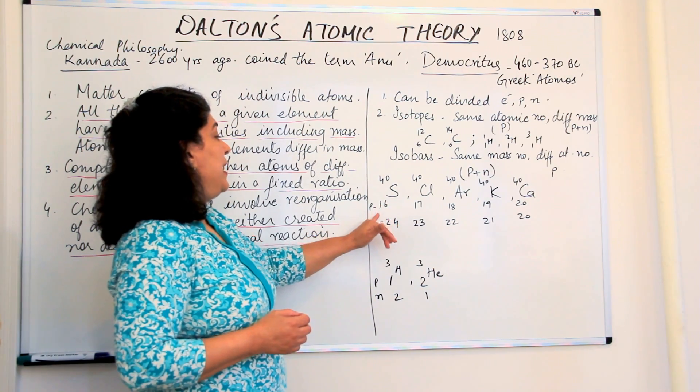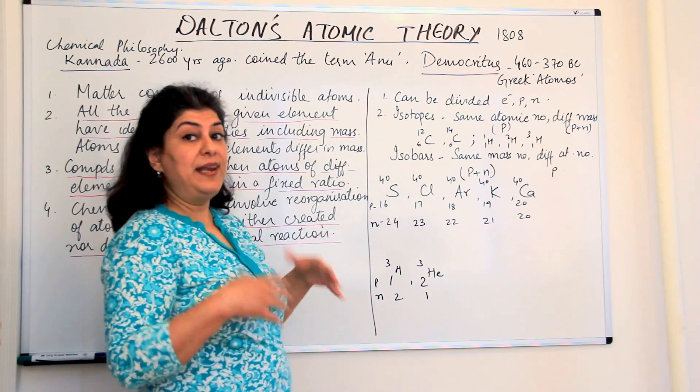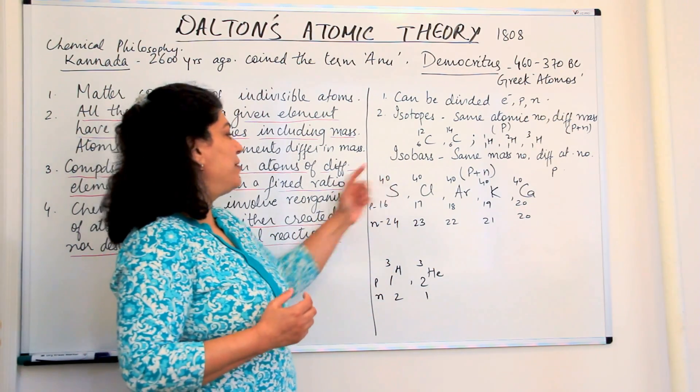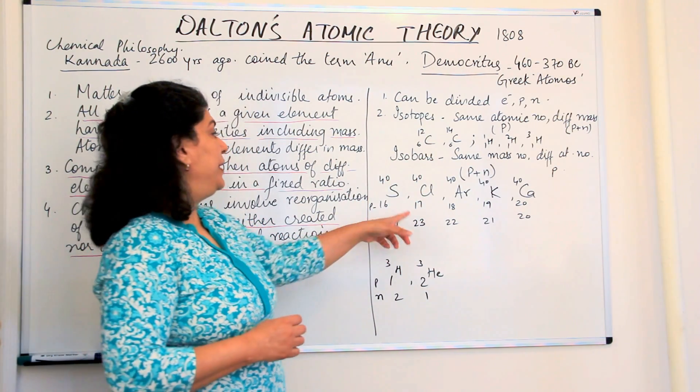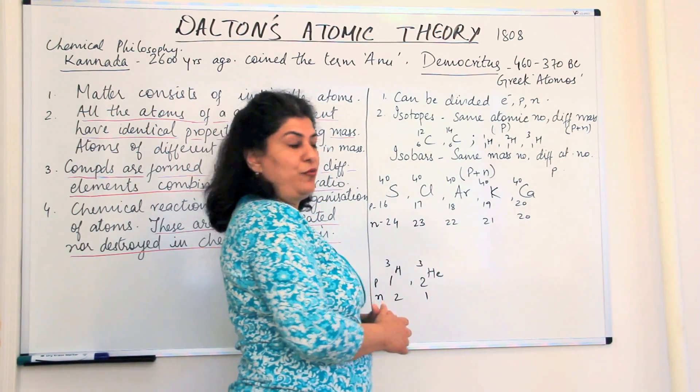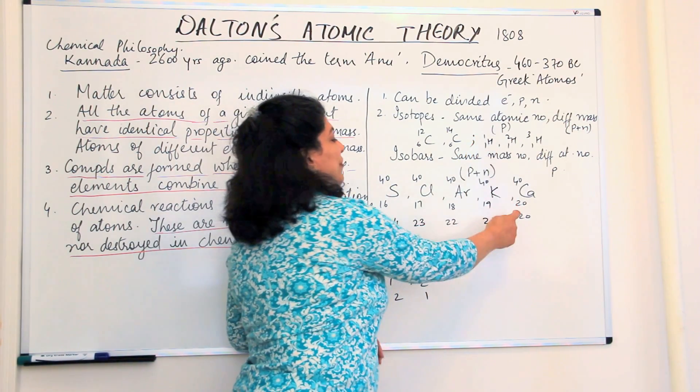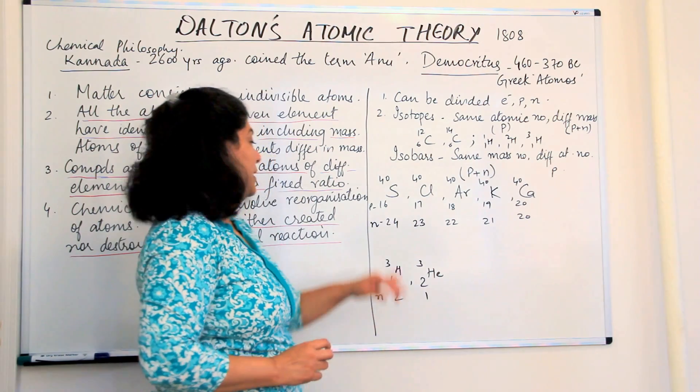For example, sulphur has 16 protons and one of the isotopes of sulphur can have a mass of 40. Chlorine can also have one of the isotopes of chlorine can also have a mass of 40. Argon has a mass of 40. Potassium can be 40. Calcium is 40.